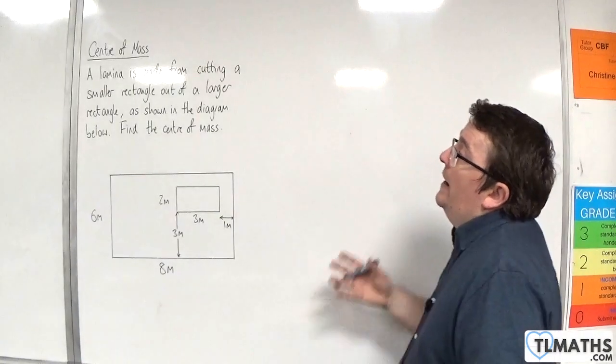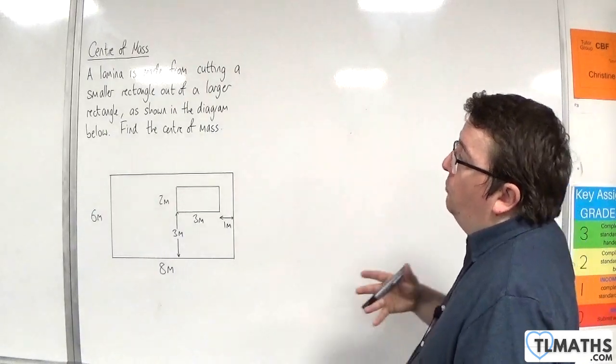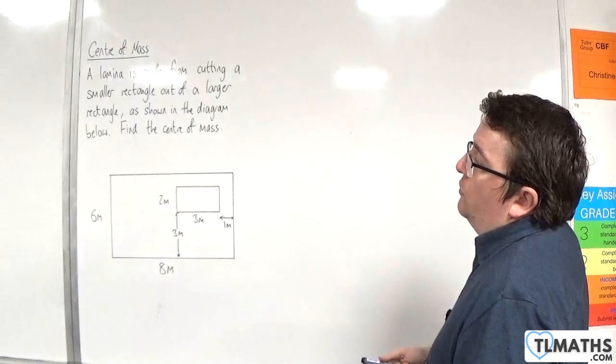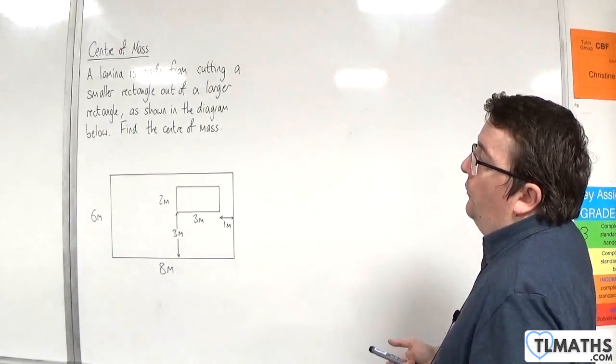So, in this example, we have a lamina made from cutting a smaller rectangle out of a larger rectangle, as shown in the diagram below. Find the centre of mass.